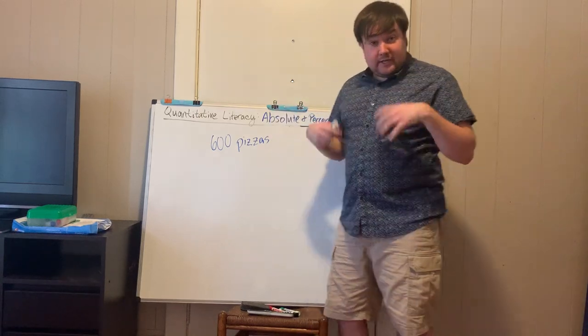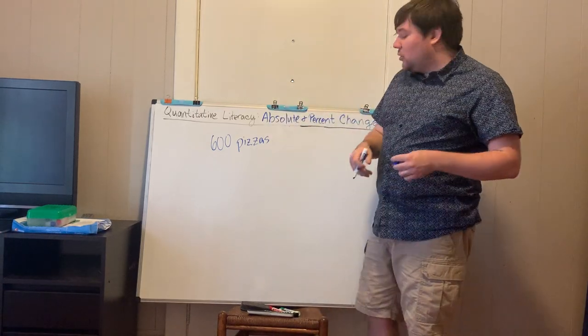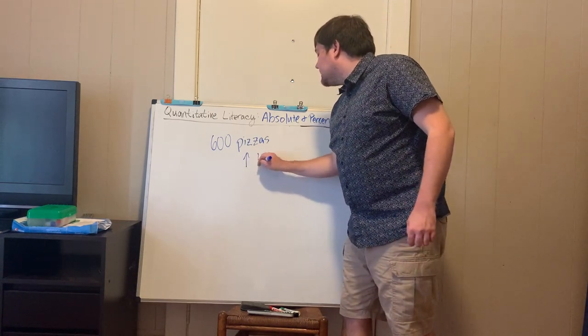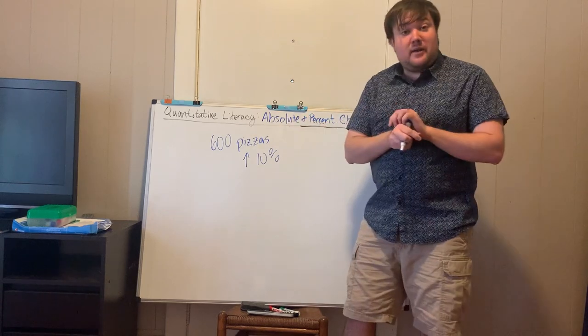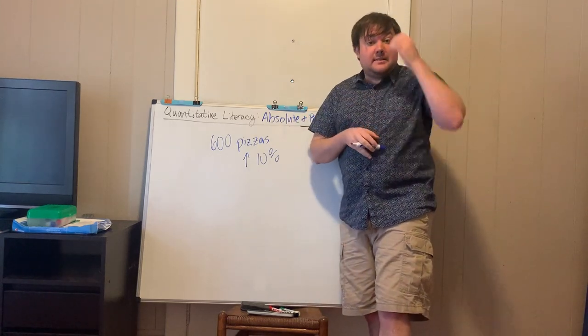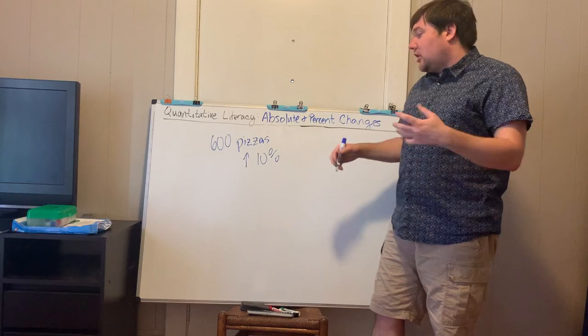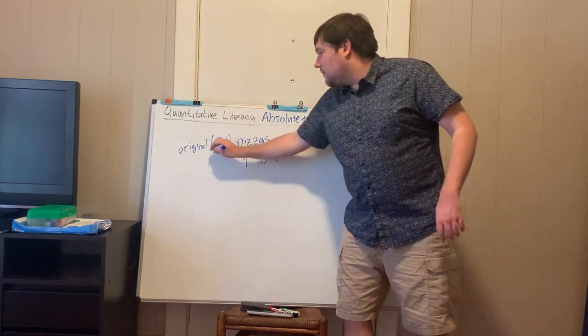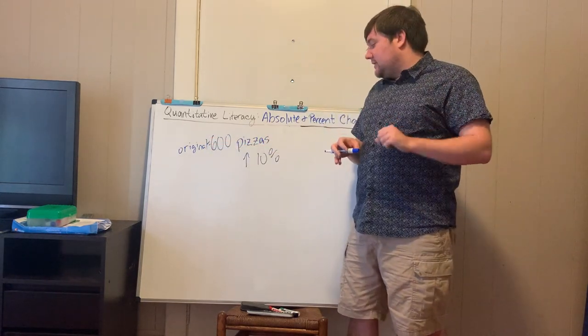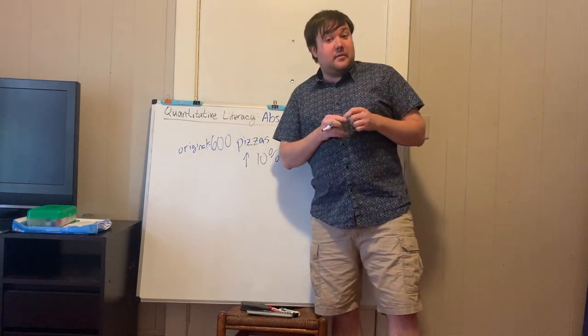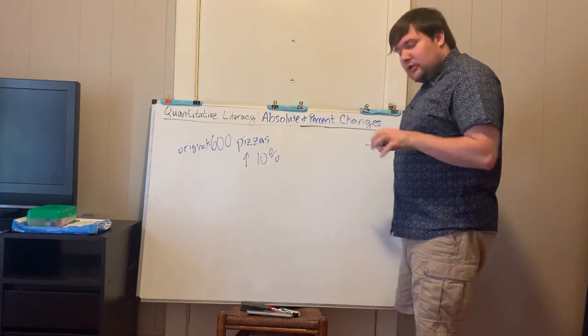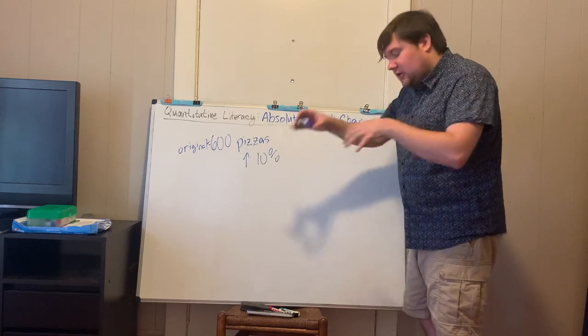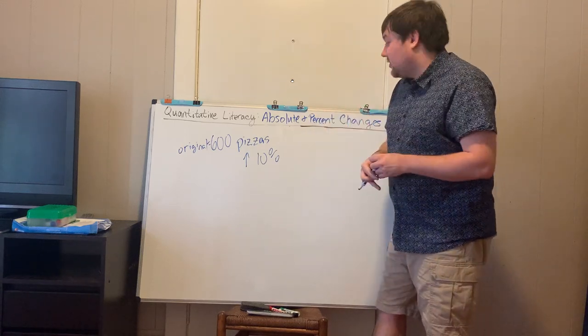Now, let's suppose instead of a total change, instead of the absolute change, we're given the percent change. So let's say instead we have an increase of 10% sales of the number of pizzas. How do we find our new value? Let's assume that 600 is our original value. There's actually two ways we can go about it. I'll show you the longer version first, and then bring it back to a more condensed version.